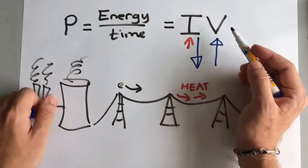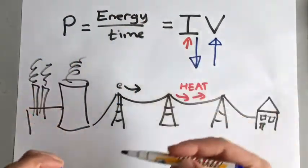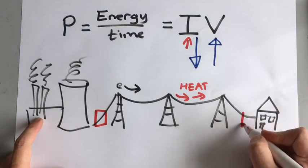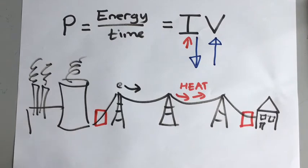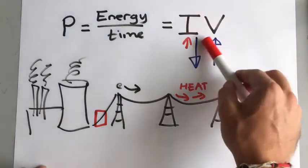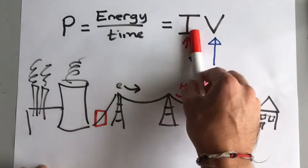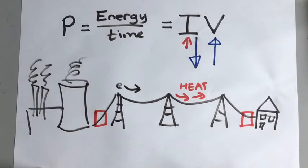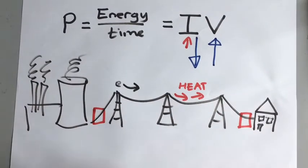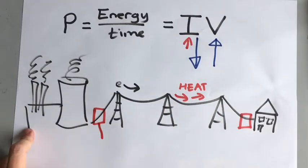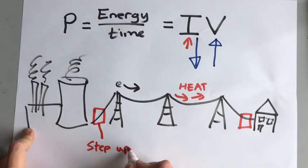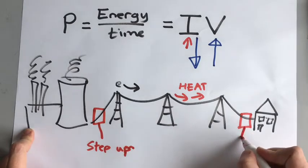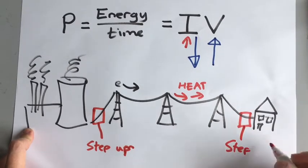The amount of energy that you're transferring stays the same. The way that we do that is with transformers here and here. Transformers are a way of changing the ratio — changing the amount of current and the amount of voltage that is travelling through the wires — and what that does is reduce the amount of heat lost. This transformer here is called a step-up transformer, and this one here is called a step-down transformer.